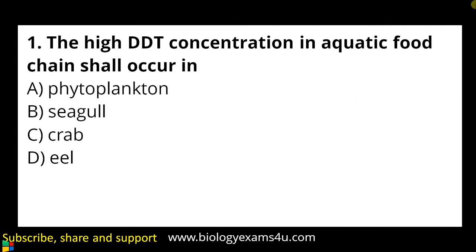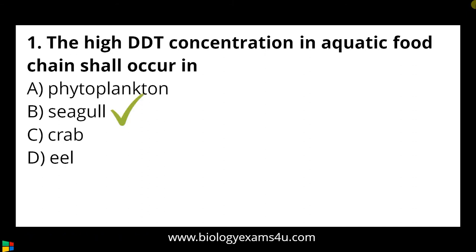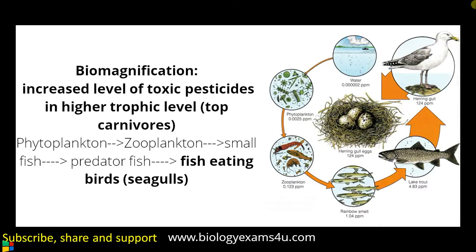Options are: a) phytoplankton, b) seagull, c) crab, d) eel. The answer is seagull. The process behind this is biomagnification — the increased level of toxic compounds or pesticides at higher trophic levels in a food chain. Water has 0.0002 ppm of DDT, which increases through phytoplankton, zooplankton, and large fish at 4.83 ppm, up to fish-eating birds like seagulls at 124 ppm.